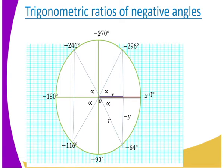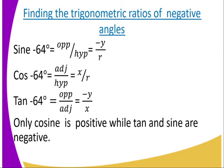Today I want us to use negative 64 degrees to get the trigonometric ratios. For sine negative 64 degrees, it is opposite over hypotenuse, which equals negative y divided by the radius r. Tan negative 64 degrees equals the opposite divided by the adjacent, which is negative y divided by x. In this case, we apply the fourth quadrant properties: only cosine is positive, while tan and sine are negative.